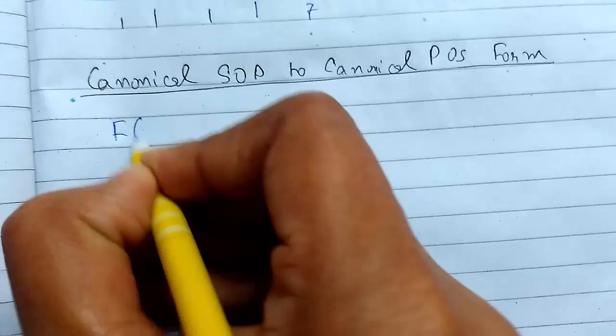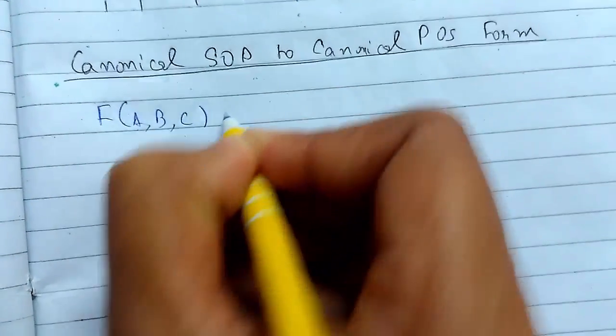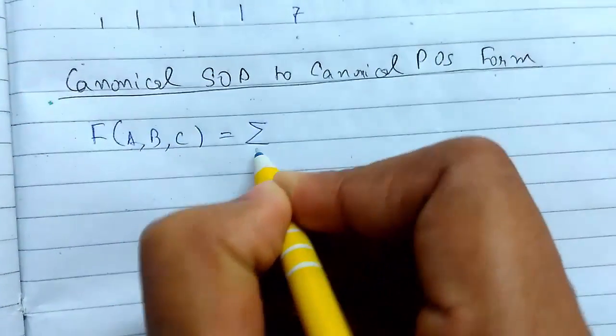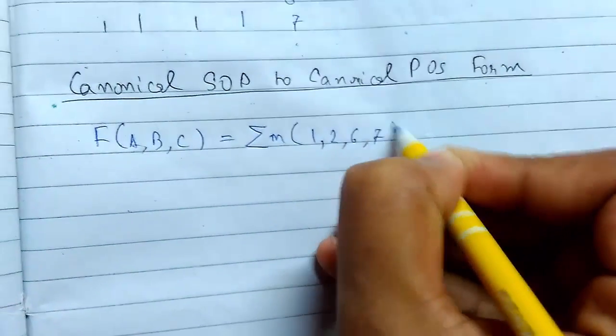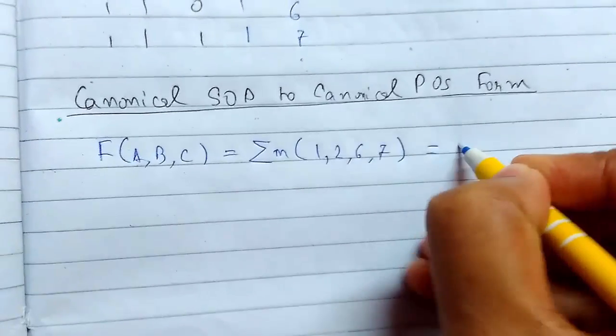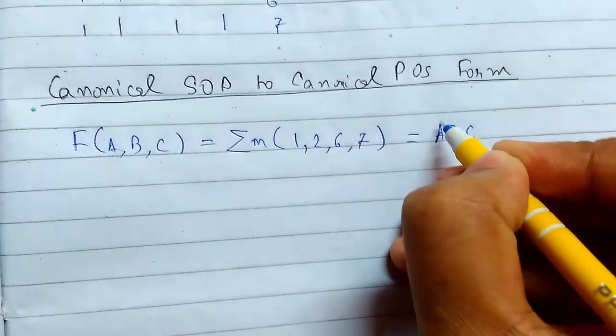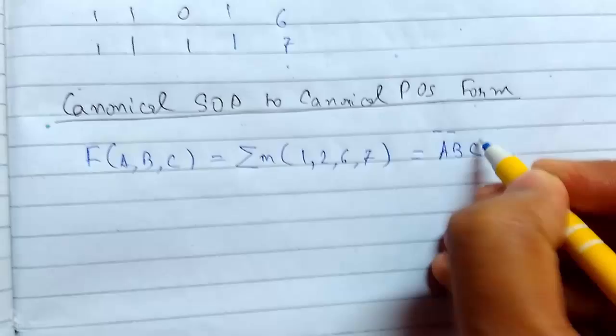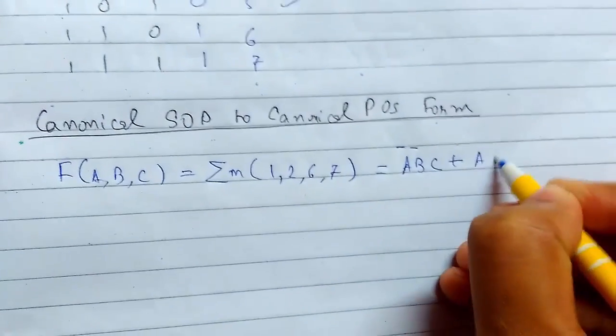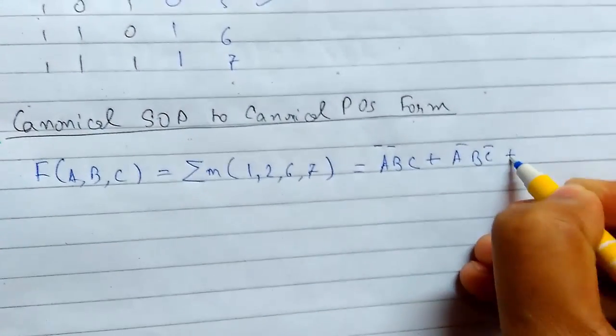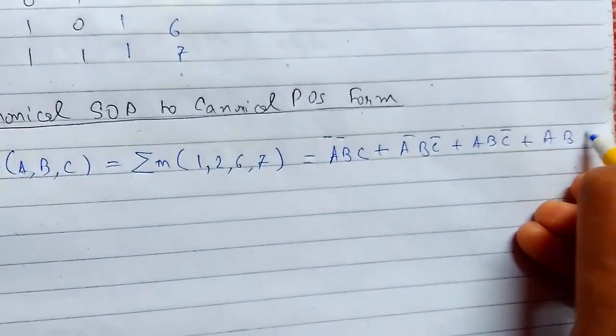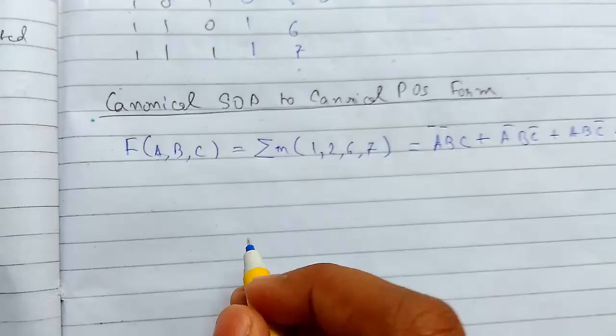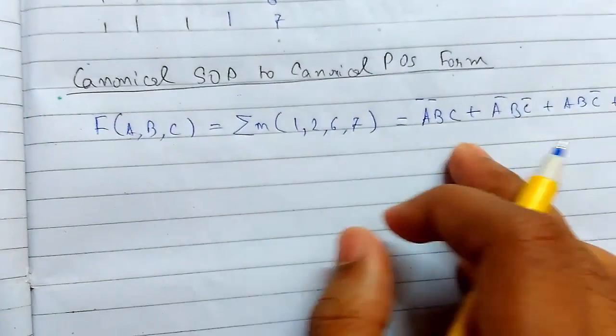Suppose we have a function of three variables. F(A,B,C) = Σm(1,2,6,7). I will write this in the form of variables, so it will be in min terms like this. So I have written all this, and now we need to work with these min terms.